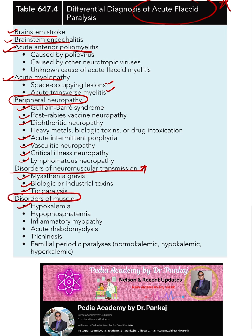Disorders of muscles are also important causes of acute flaccid paralysis. These include hypokalemia, hypophosphatemia, myopathies, rhabdomyolysis, trichinosis, and familial periodic paralysis. These are the important causes of acute flaccid paralysis.